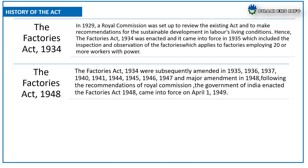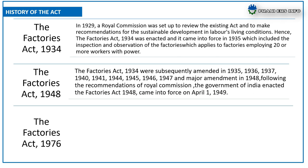The Factories Act 1934 was subsequently amended in 1935, 1936, 1937, 1940, 1941, 1944, 1945, 1946, 1947, and was majorly amended in 1948. Following the recommendations of the Royal Commission, the Government of India enacted the Factories Act 1948, coming into force on April 1, 1949.